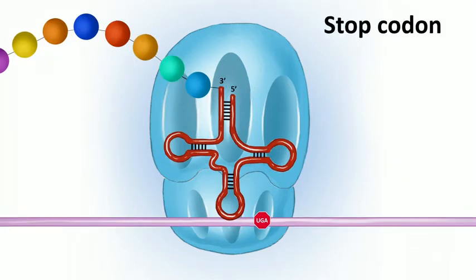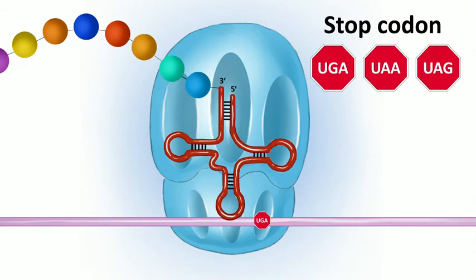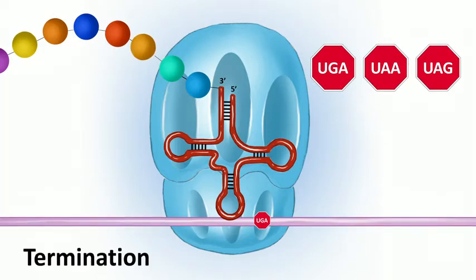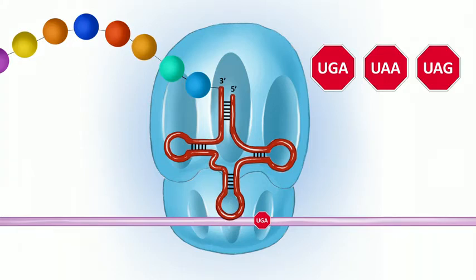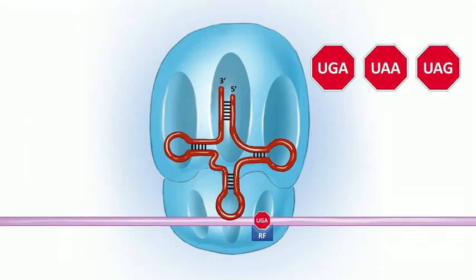When the codon at the A site is a stop codon — the three RNA stop codons are UGA, UAA, and UAG — that signals the ribosome that we've reached the end. This is termination. Those stop codons don't match up to a tRNA, so instead a release factor binds to the mRNA and hydrolyzes GTP. The new polypeptide is released from the tRNA at the P site, and then the ribosome subunits and tRNA all separate and can be reused.